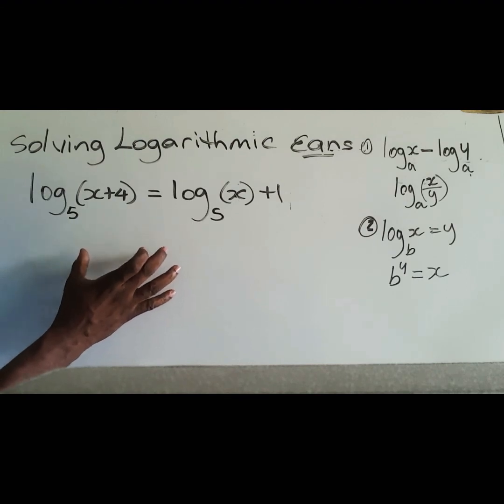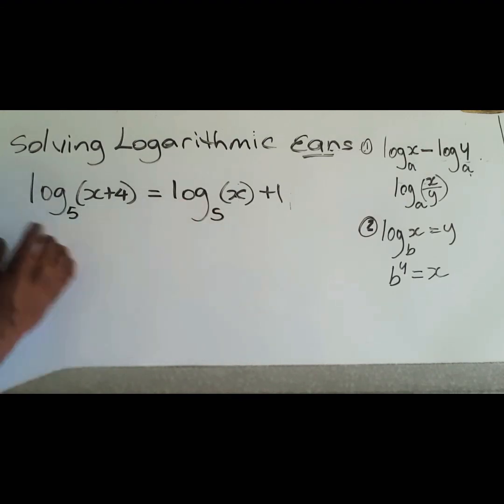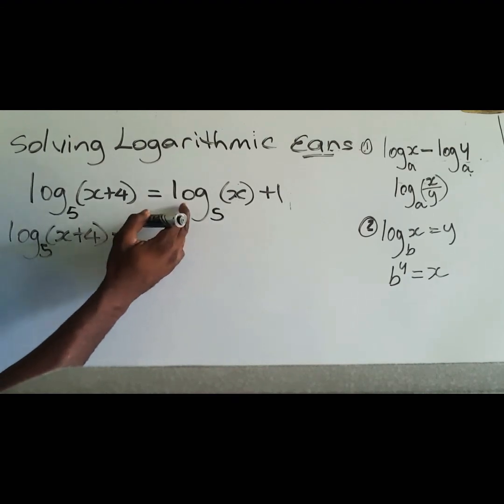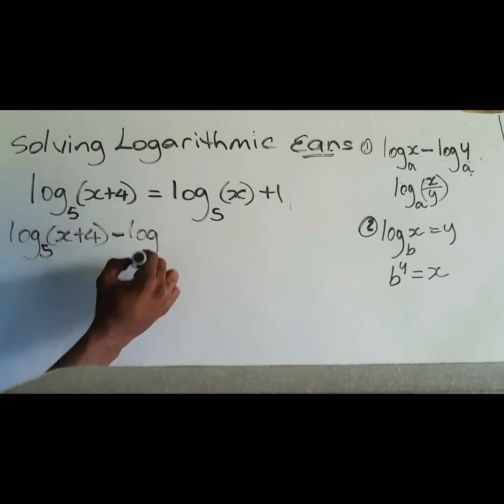Whenever we're solving logarithmic problems, most times in situations like these we try to gather the logs on one side. So I'm going to rewrite this so we have log base 5 of x plus 4, I'll subtract this from both sides which is log base 5 of x, so I have log base 5 of x which is equal to 1.